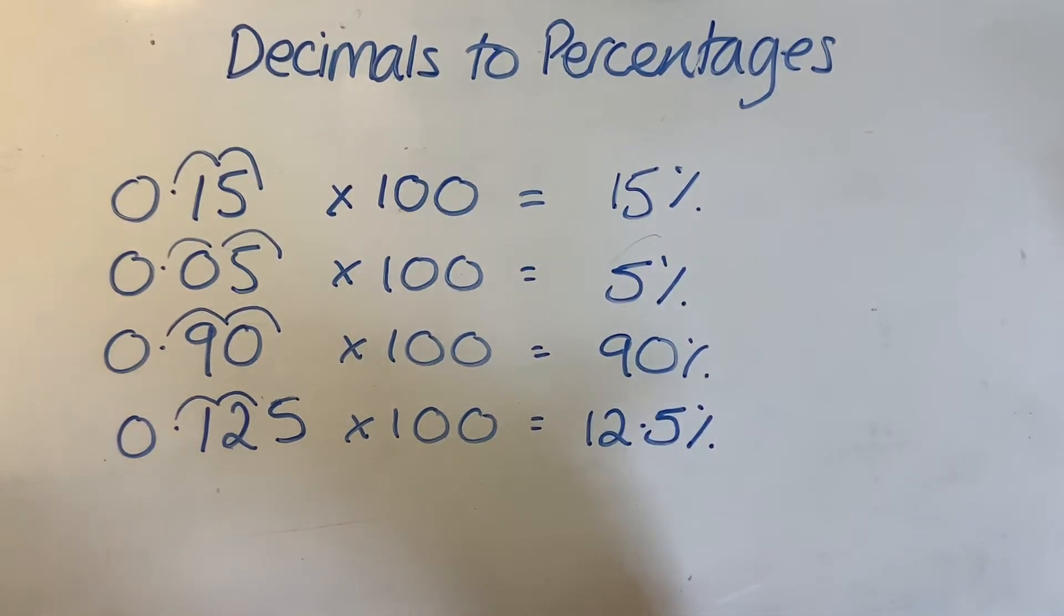Because mostly we're taught how to convert percentages into decimals, and the way to convert a percentage to a decimal basically is just to do the opposite. So if we had, say, 27%, we would do 27 divided by 100, which would give us 0.27.